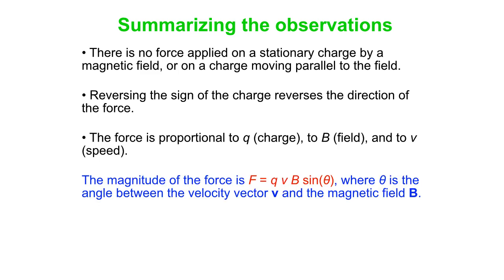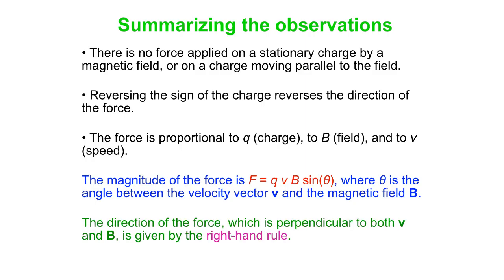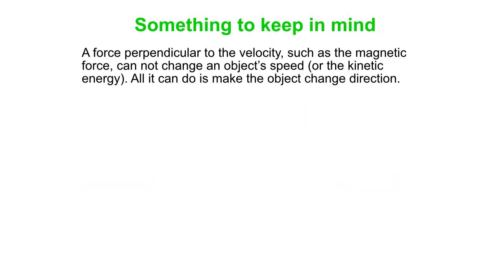What we write down for the magnitude of the force is: F = QVB sinθ, where θ is the angle between the velocity vector and the magnetic field. That's somewhat more complicated than the QE force for electric fields. The direction of the force — which is perpendicular to both V and B — is given by the right-hand rule. A force perpendicular to the velocity cannot change the object's speed or kinetic energy; all it can do is change direction, giving you circular motion.